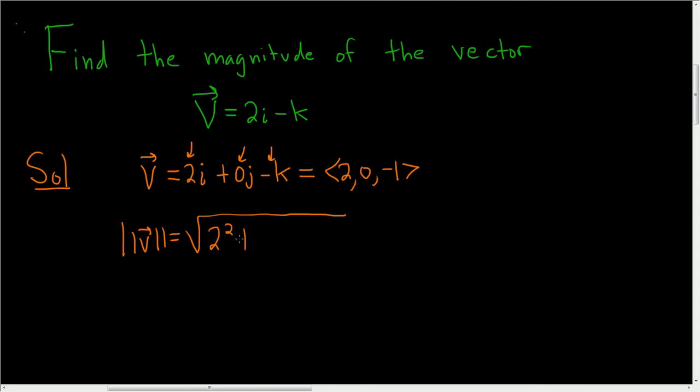So 2 squared plus 0 squared plus negative 1 squared. 2 squared is equal to 4, 0 squared is just 0, and negative 1 squared is 1.